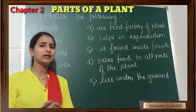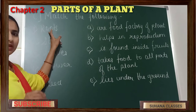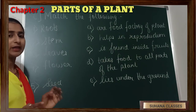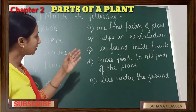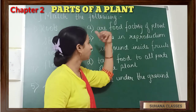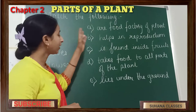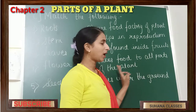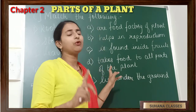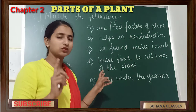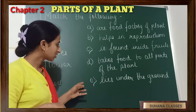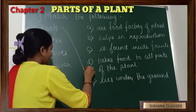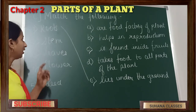The first one is root. We know that root absorbs water and lies under the ground. Looking at the options: 'food factory of a plant' — no; 'helps in reproduction' — no; 'found inside the fruit' — no; 'takes food to all parts of the plant' — no. The correct answer is 'lies under the ground,' so root matches that option.